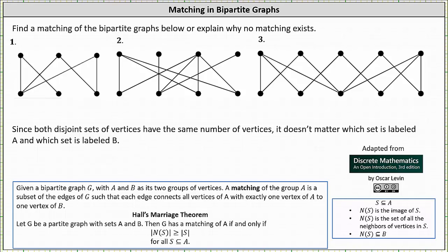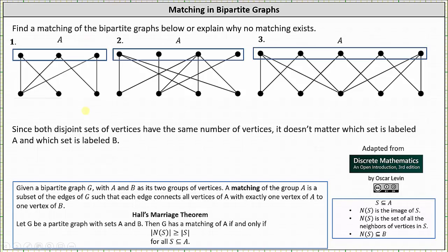We'll find a matching of the bipartite graphs below or explain why no matching exists. Since both disjoint sets of vertices have the same number of vertices, it doesn't matter which set is labeled A and which set is labeled B. Let's label the top sets A and the bottom sets B.